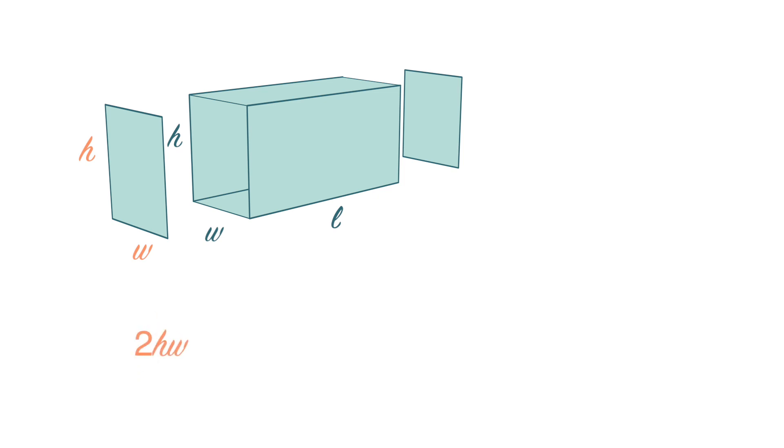Then we find the area of the top and bottom faces. The area of the rectangle here is W times L, and since the two rectangles are of the same size, it's 2 times W L.